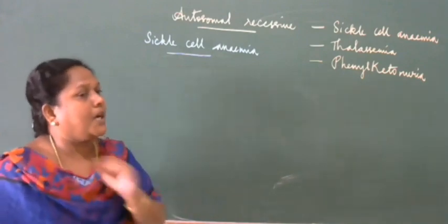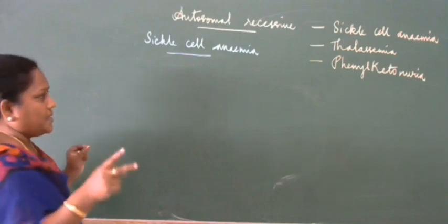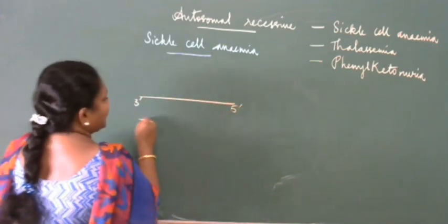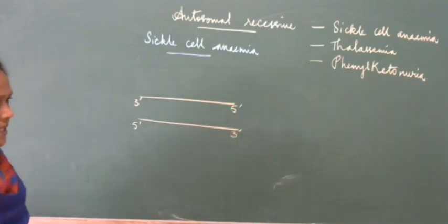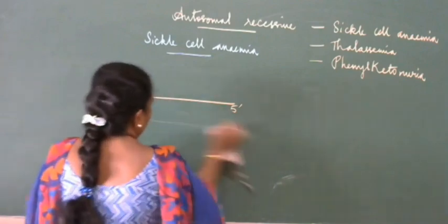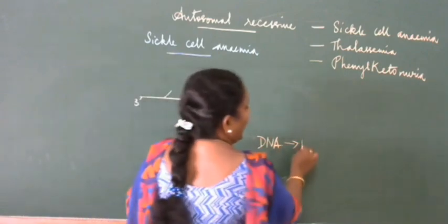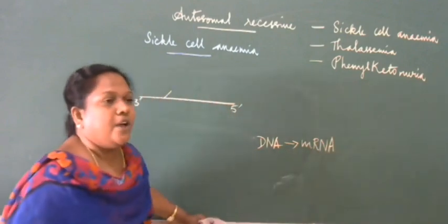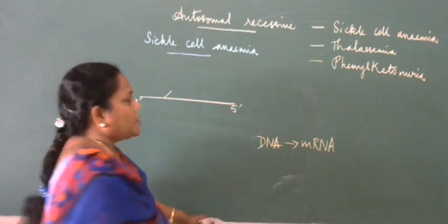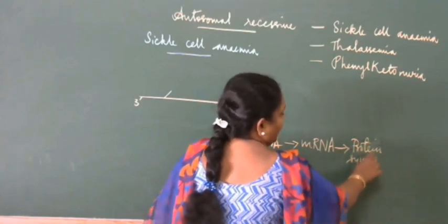Protein has to be synthesized and genes have to function properly. DNA has two strands. We are going to focus on one strand — the template strand — which is involved in protein synthesis. The message from the DNA will be copied to the mRNA. This mRNA will be responsible for producing the protein — for synthesizing the protein.